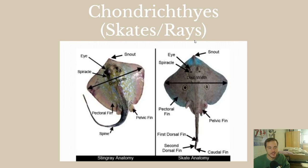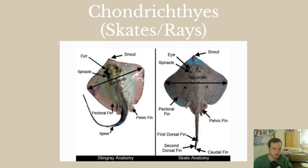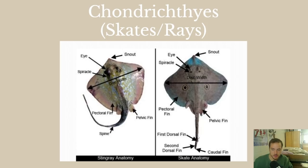Skates and rays look very different from most fish, but once you understand them, they make sense. Those large wing-like extensions are just very large pectoral fins. Pelvic fins are on the underside. Dorsal fins on skates tend to be at the end of the tail. The difference between skates and rays: rays have stingers on the tail, skates don't.